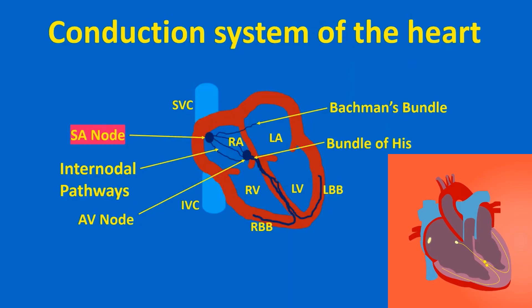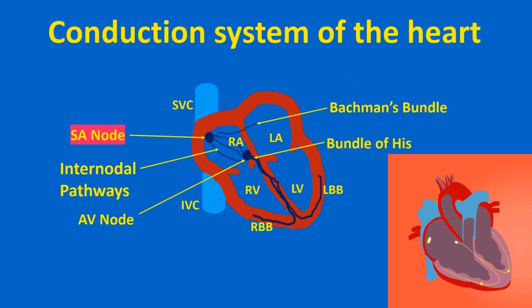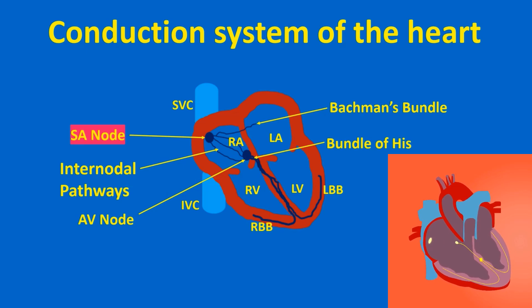ECG records the electrical activity of the heart. The electrical activity of the heart normally originates in the sinoatrial node situated in the right upper part of the right atrium and gets conducted down sequentially to reach the ventricles.